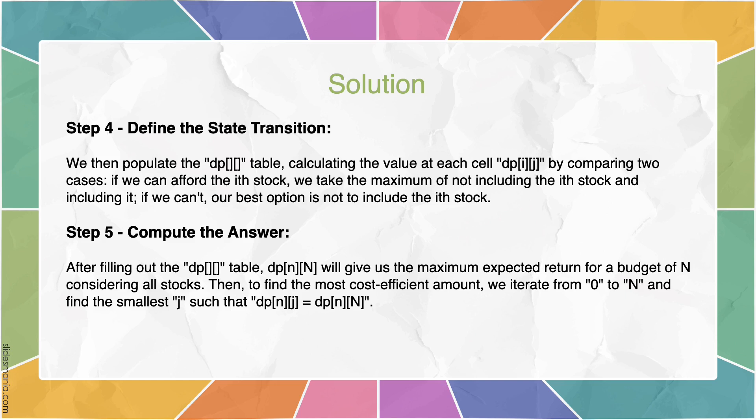In our last step, we compute the answer. After filling out the DP table, DP lowercase n and capital case N will give us the maximum expected return for a budget of n, considering all stocks. Then to find the most cost-efficient amount, we iterate from 0 to n and find the smallest j, such that DP nj is equal to DP nn. My teammate Zhenyu is going to present a detailed demo to help you better understand how our program works.